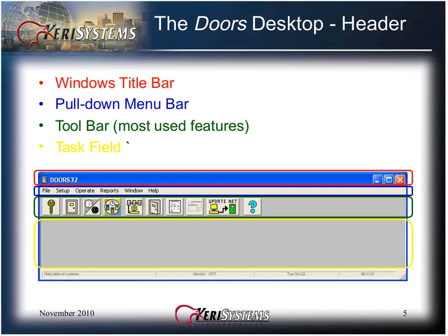The DOORS desktop header is made up of four distinct sections: the Windows title bar, the pull-down menu bar, the toolbar for access to the most used features of DOORS, and the task field. The task field is a sub-window of the features selected from the pull-down menu bar or the toolbar icon.